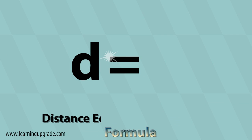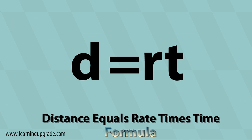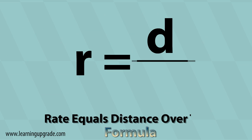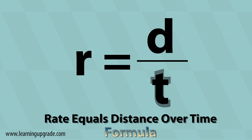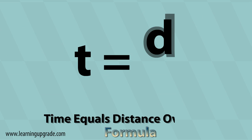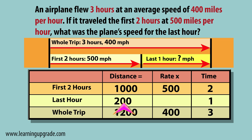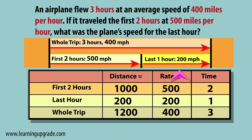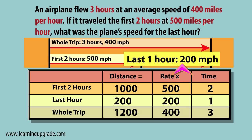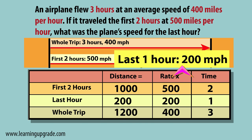To find the distance: rate times time. To find the rate: distance over time. To find the time: distance over rate. Figure out if any distances or times are equal to help you solve for the final answer.